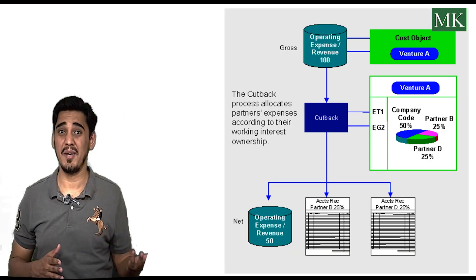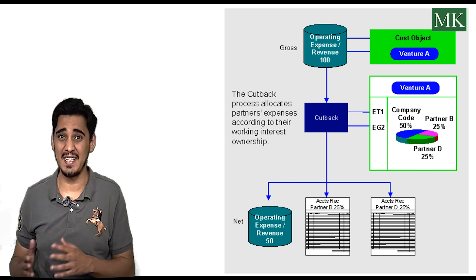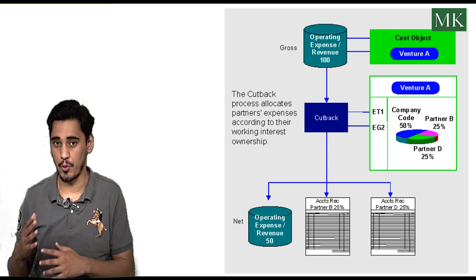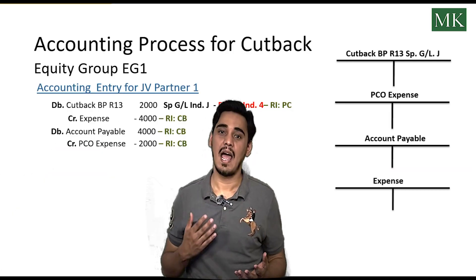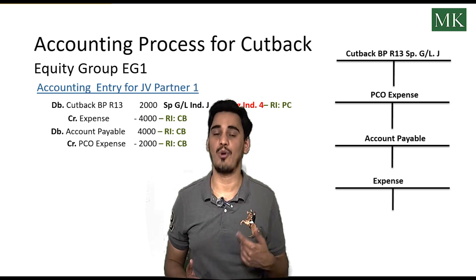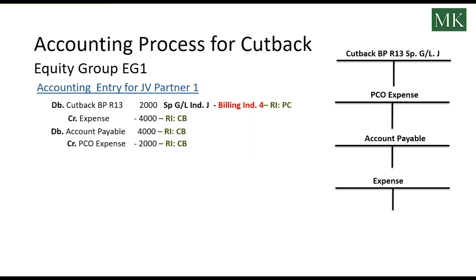This image is taken from help.sap.com, which also explains the whole cutback transaction process. Now let's see the accounting process and trial balance view for the cutback transaction. When the cutback is executed, two accounting documents are created: one for the joint venture partner share and another for the operator share.